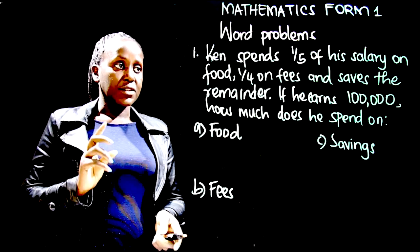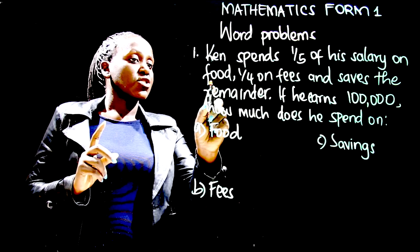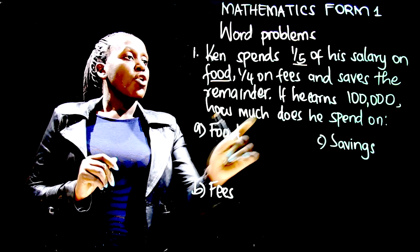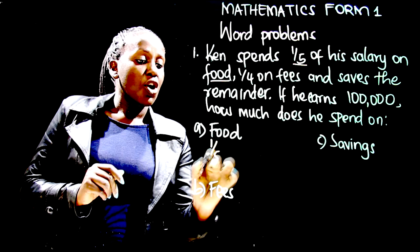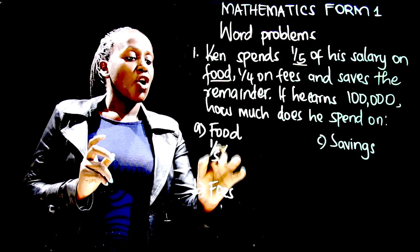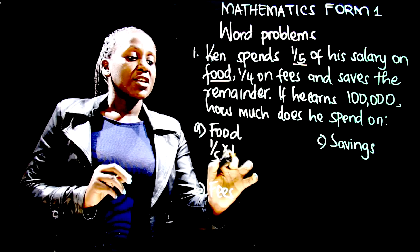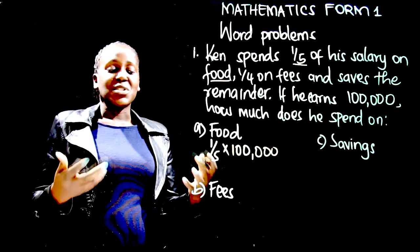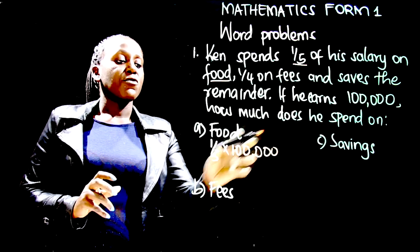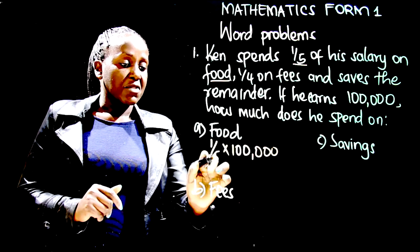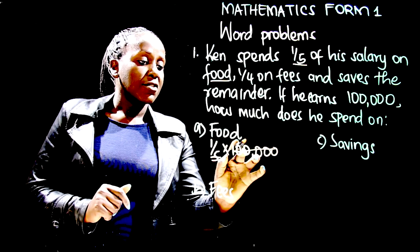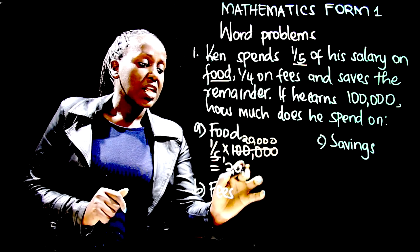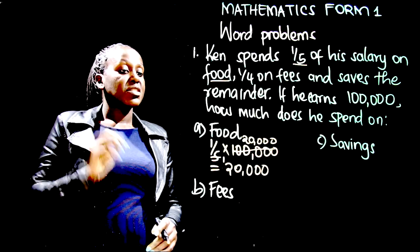The fraction that goes to food is 1 over 5, so this is what we use to answer part a. A fifth of his salary means we multiply by one-fifth. His salary is 100,000 shillings, so we find 1 over 5 of 100,000. 100,000 is divisible by 5 giving 20,000, so 1 times 20,000 equals 20,000 shillings — that is how much he spends on food.